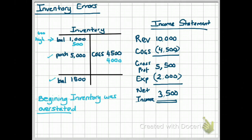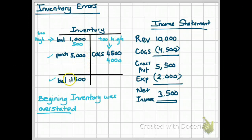How did we get $4,000? We said that our beginning balance should have been $500, which means our cost of goods sold should have been $500 plus $5,000 minus our ending balance of $1,500, giving us a balance of $4,000.